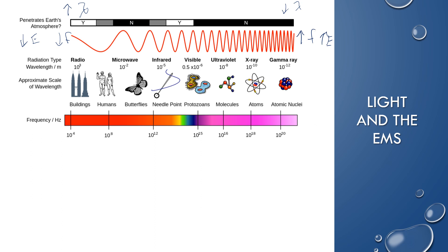Frequency and energy are directly related, so radio waves have the lowest energy and gamma rays have the highest. Radio and microwaves have the lowest energy and we use them regularly. Radio waves also travel long distances because of their long wavelength, which is why they can broadcast. Within visible light, colors go from red — having the longest wavelengths and lowest energy — through the rainbow order up to blue and violet, which have the highest energy and shortest wavelengths.